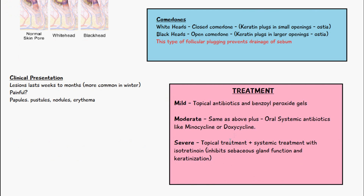For treatment of acne vulgaris: mild cases are managed with topical antibiotics and benzoyl peroxide gels. Moderate cases add an oral systemic antibiotic such as minocycline or doxycycline, typically 50 to 100 milligrams twice a day, tapered down as the acne improves. In severe cases, isotretinoin is added to the topical and systemic treatment — it inhibits sebaceous gland function, preventing sebum secretion and keratinization.